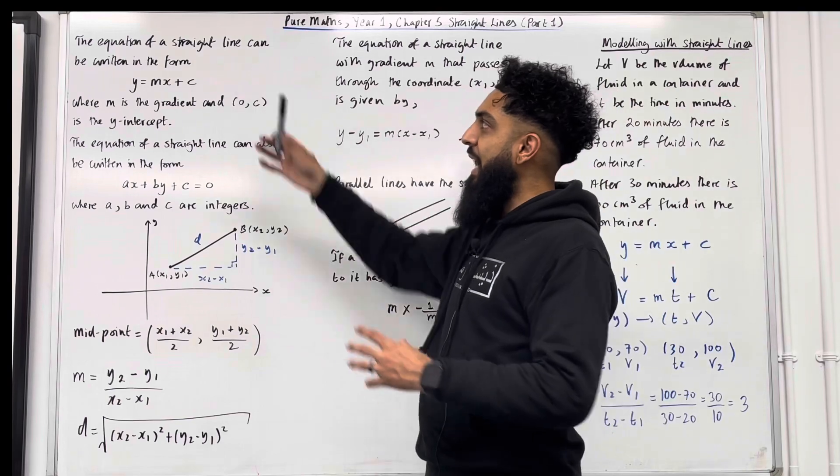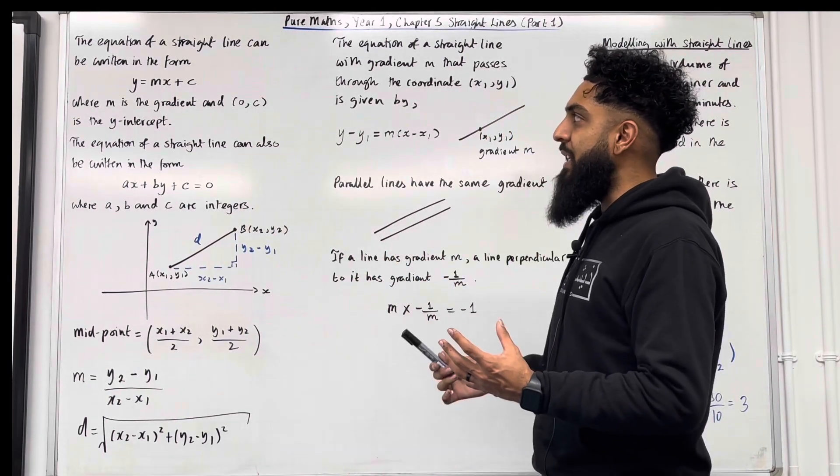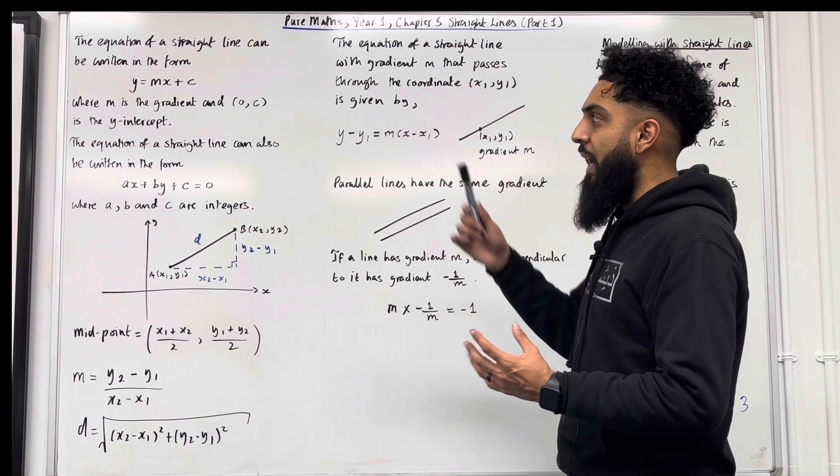The equation of a straight line can be written in the form y equals mx plus c, where m is the gradient and 0c is the y-intercept.